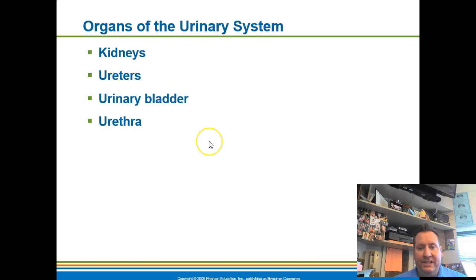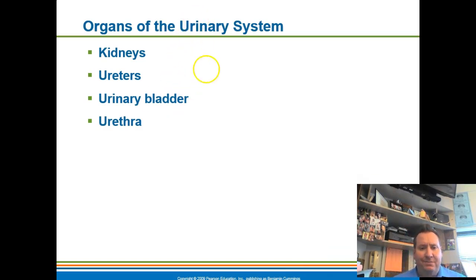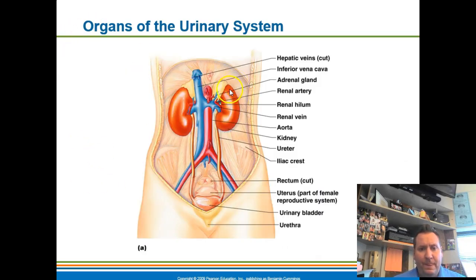The four major organs of the urinary system are the kidneys, ureters, urinary bladder, and urethra. The kidneys sit at the top, the ureter drains down into the bladder, and the bladder has a tube coming out called the urethra. These are relatively simple structures, not hard to learn or locate.